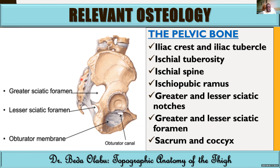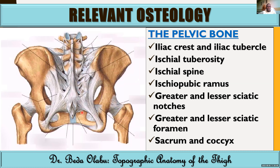The sacrum and coccyx are also important surface landmarks in the posterior thigh. In this image we can see better the back of the sacrum and the tip of the coccyx, the sacrotuberous ligament, and the sacrospinous ligament. That is with regard to the pelvic bone.